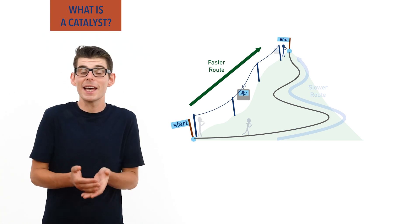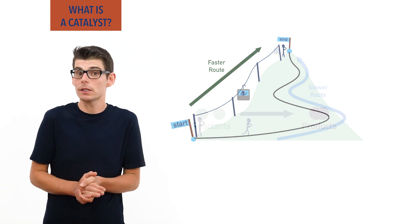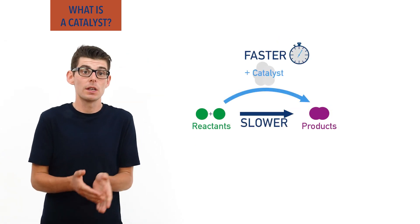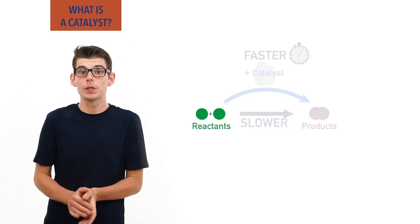In the same kind of way, a catalyst can help two reactants react faster by providing a different route to get from the start—the reactants—to the end—the products.